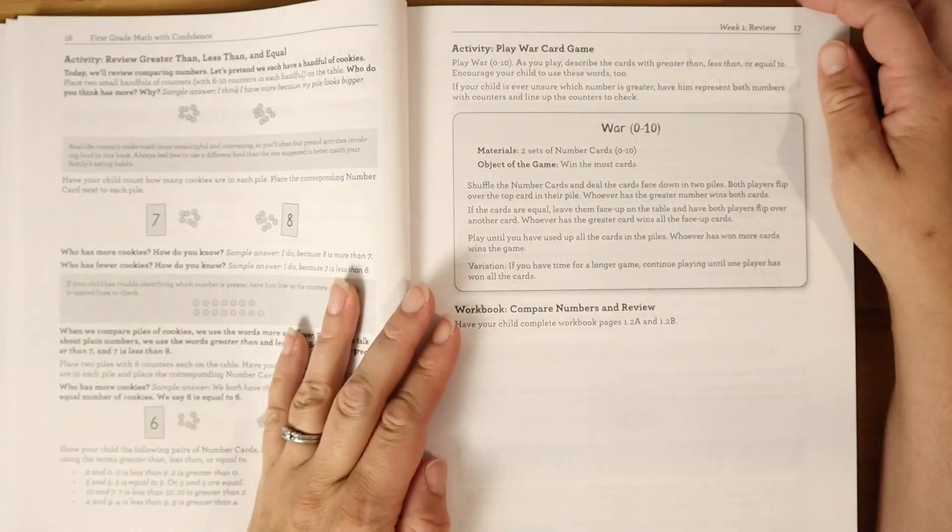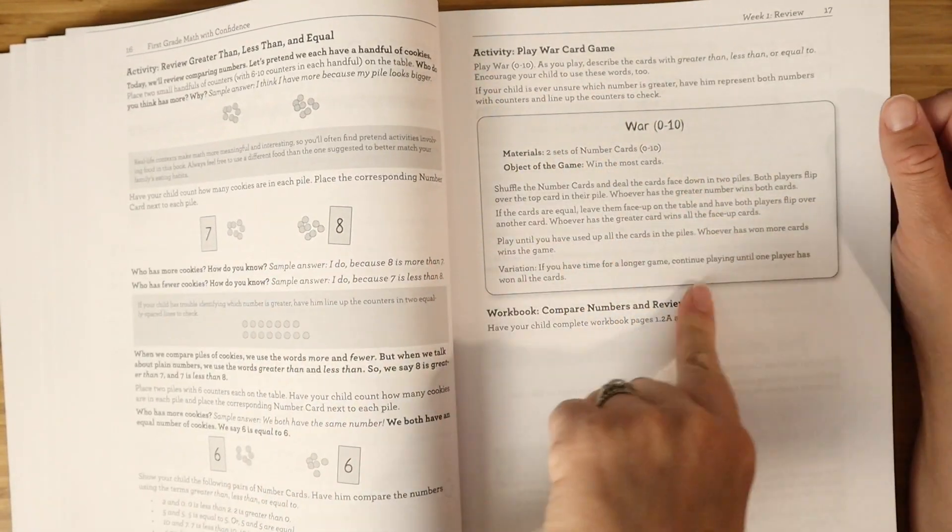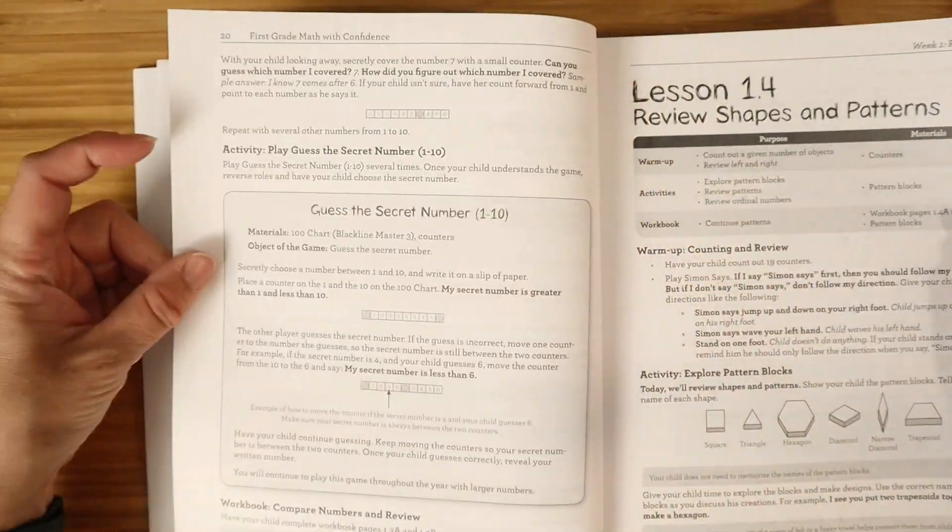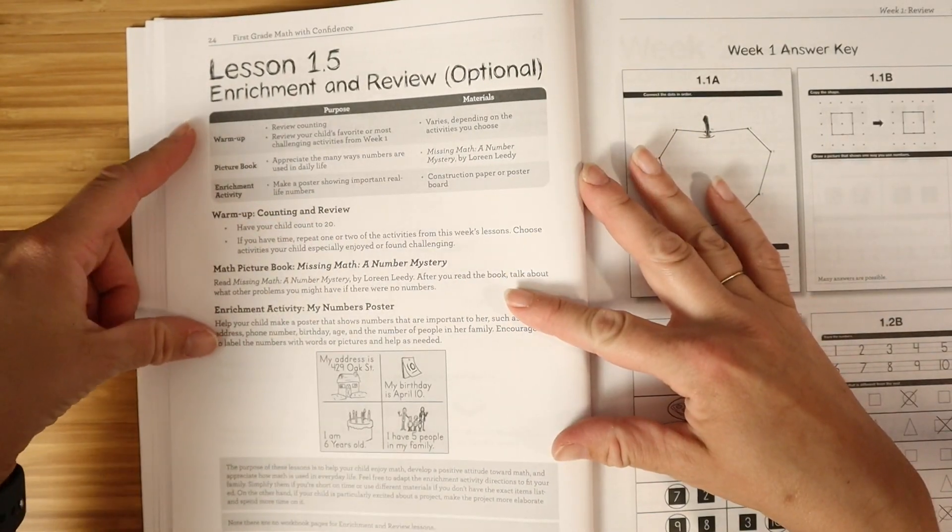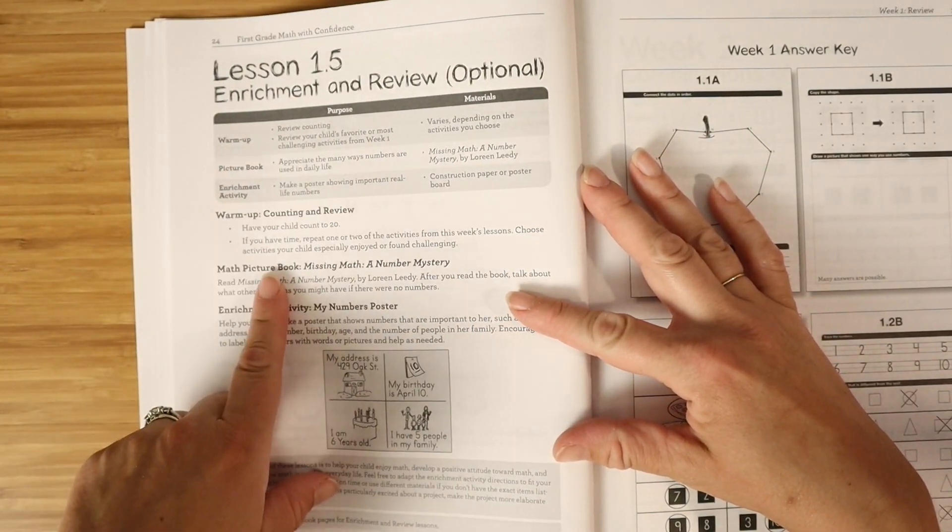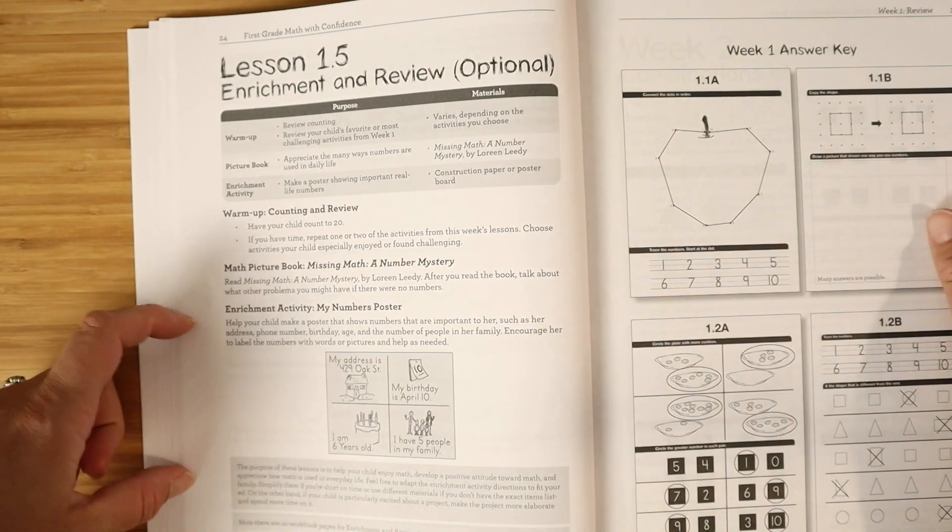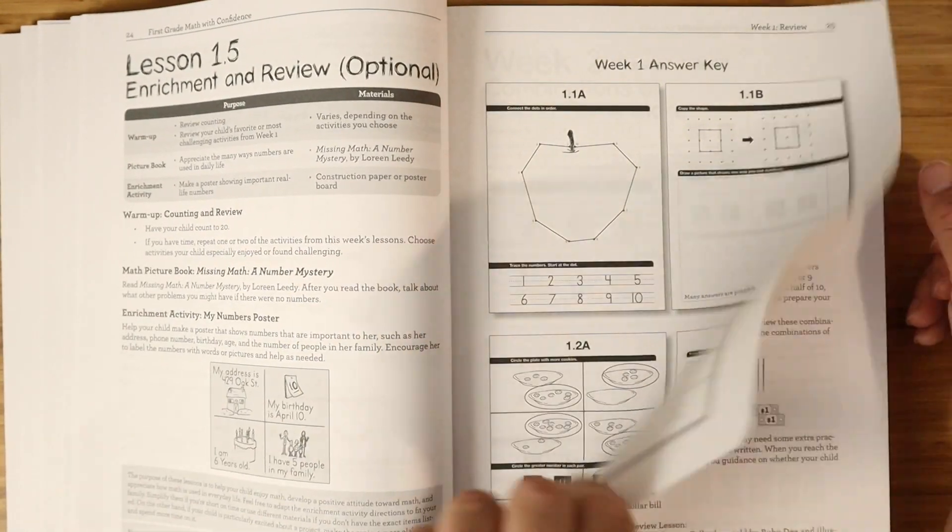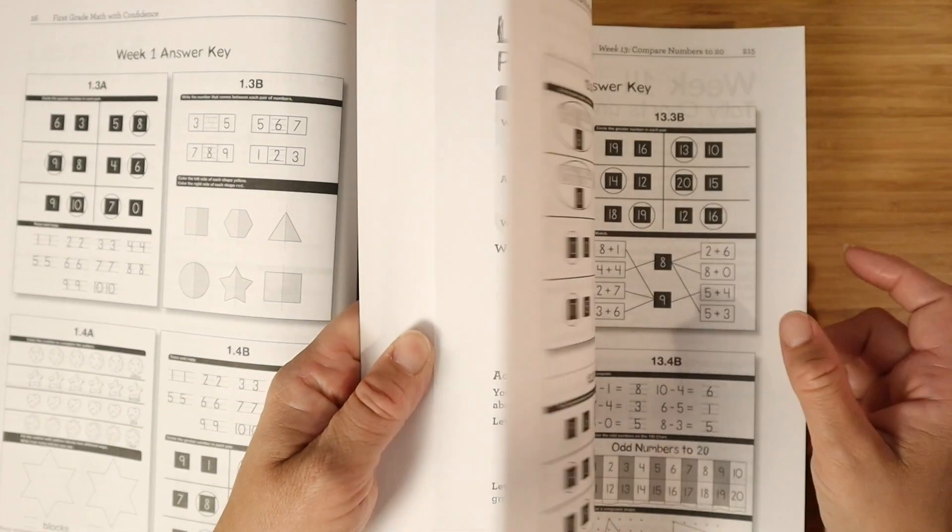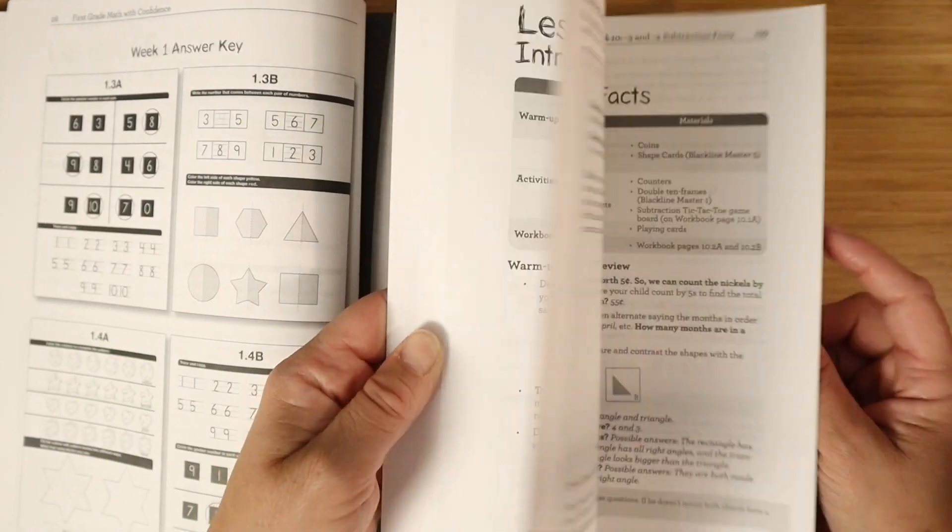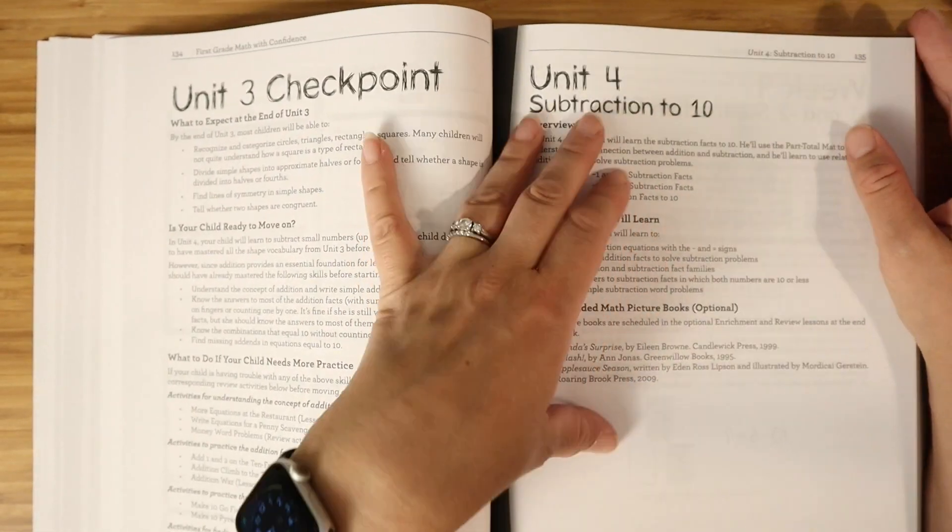Then we move into more review. We have our games are always in this box type thing here, more warmup work, more games. And then at the end of your week, you have your optional enrichment and review with the picture book. They also include answer keys in here. And then we move into week two. I do want to point out this unit checkpoint at the end of every unit.